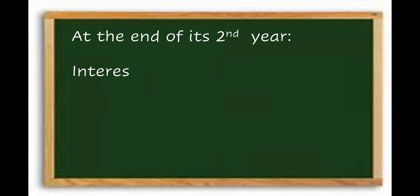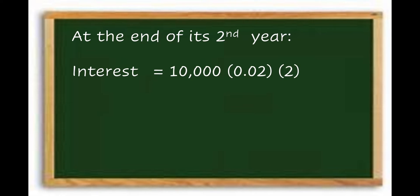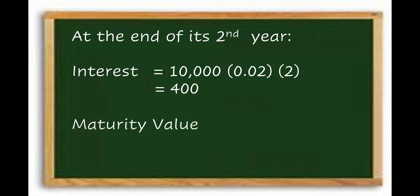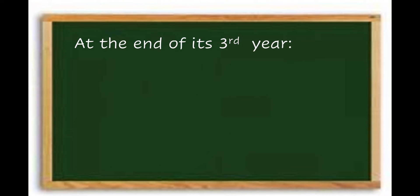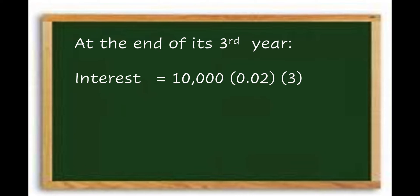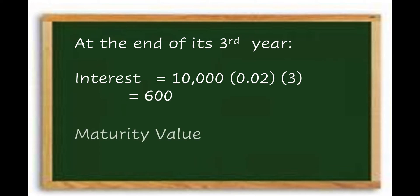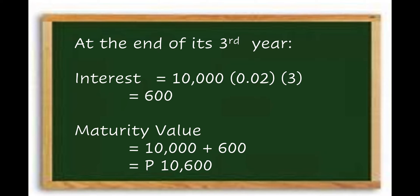At the end of the second year, the interest is ₱10,000 × 0.02 × 2 = ₱400. The maturity value is ₱10,000 + ₱400 = ₱10,400. At the end of the third year, the interest is ₱10,000 × 0.02 × 3 = ₱600. The maturity value is ₱10,000 + ₱600 = ₱10,600.